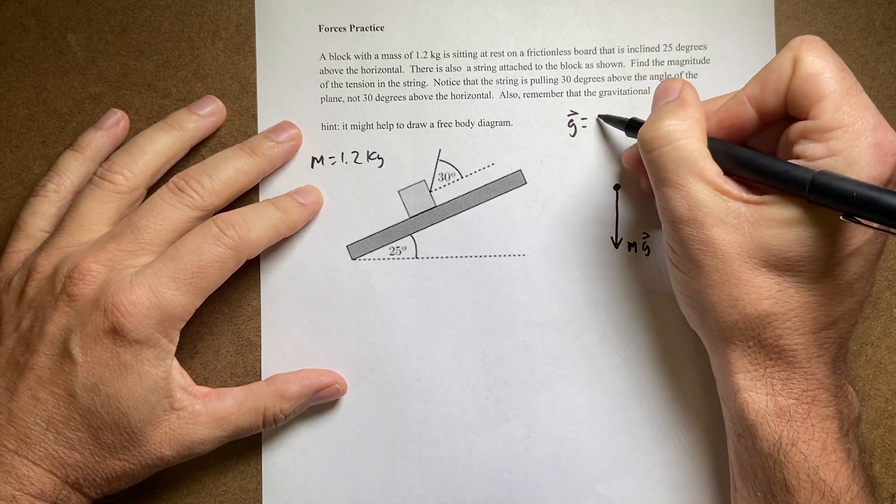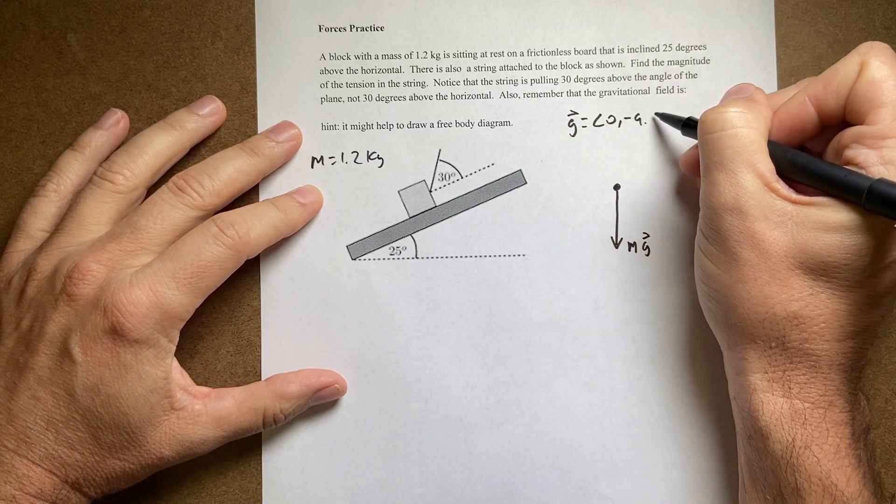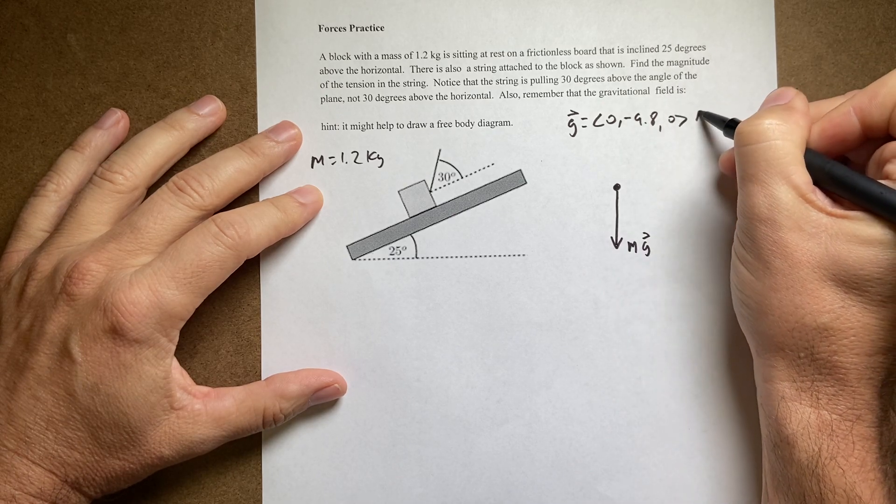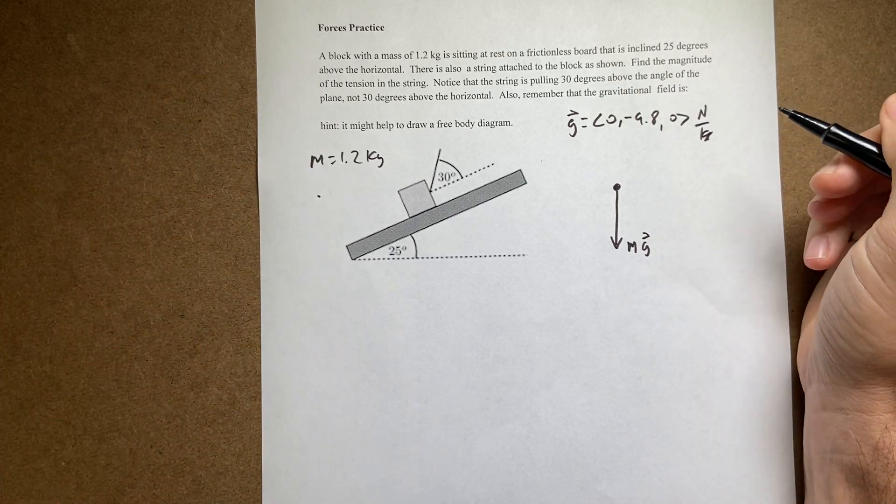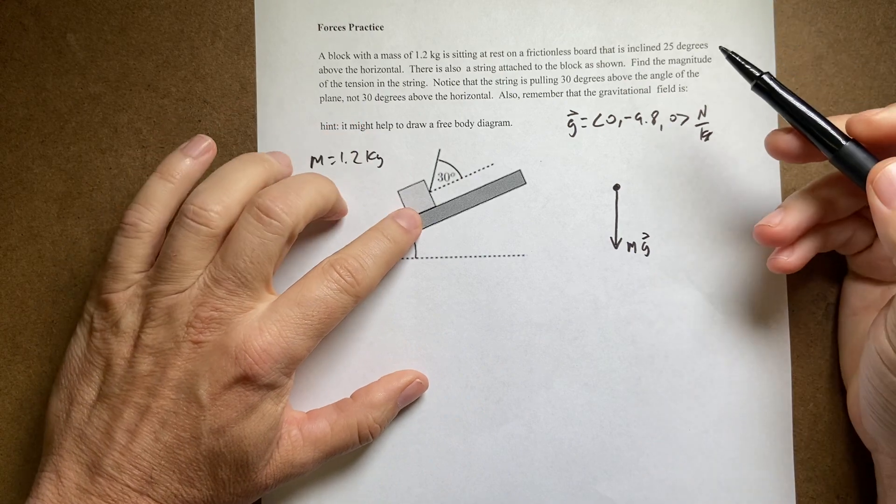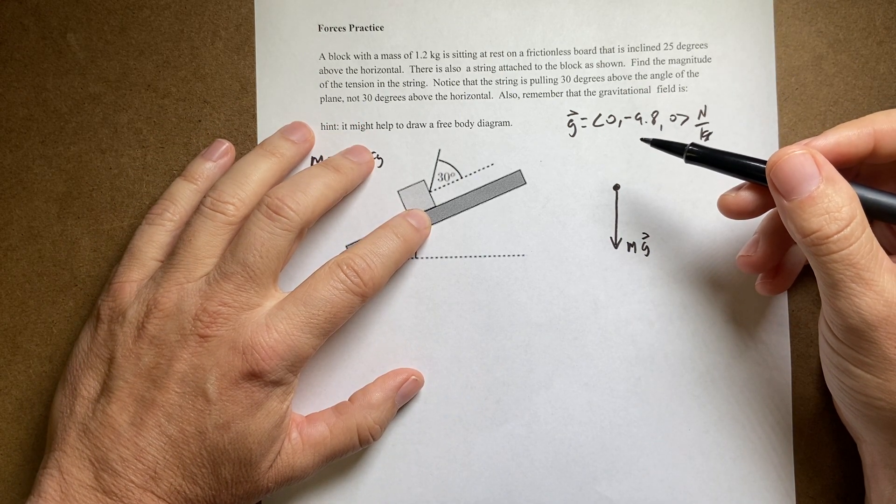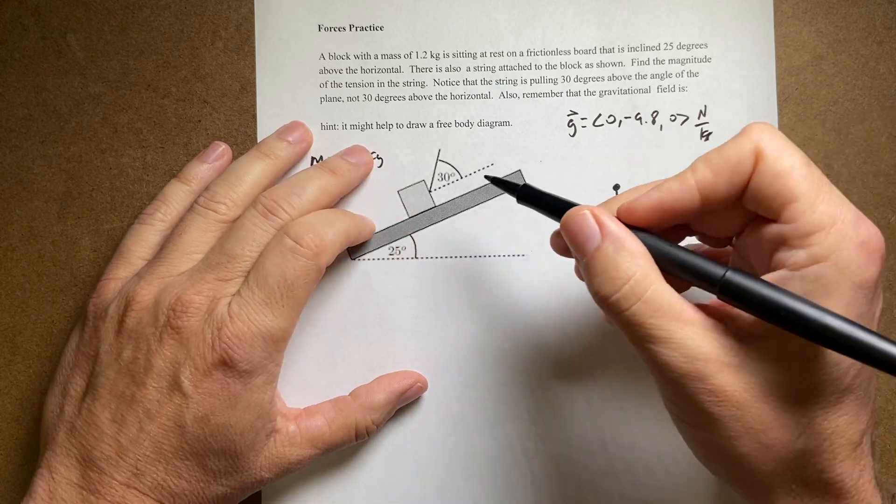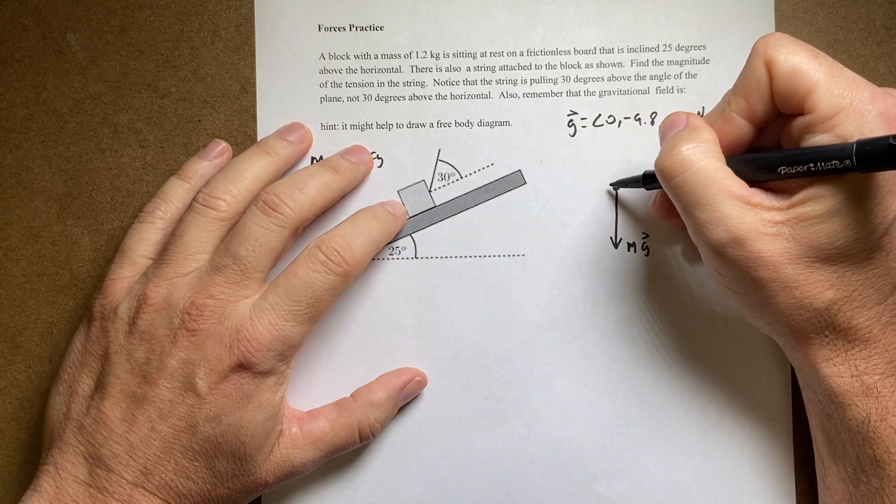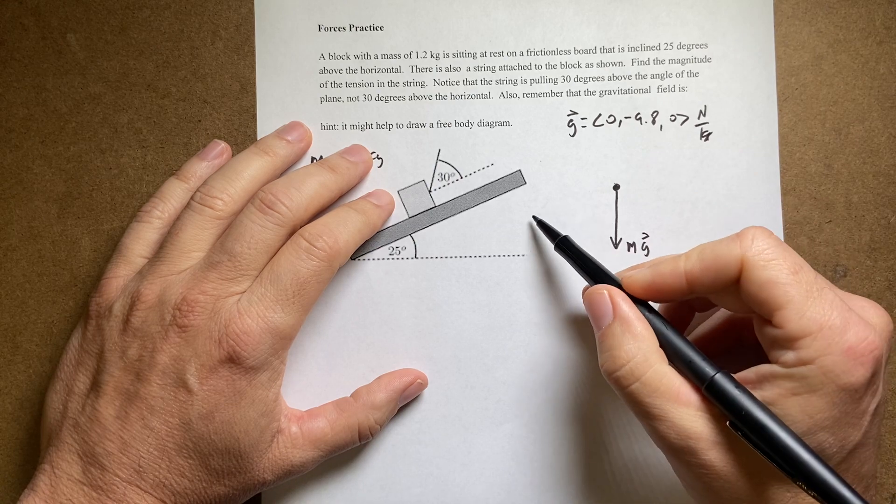Remember g equals 9.80 newtons per kilogram. Next I have the table pushes on the block. Now since it's a frictionless table, it can only push perpendicular to the table. So it can only push that way. So let me see if I can put this.